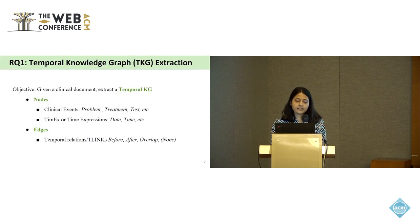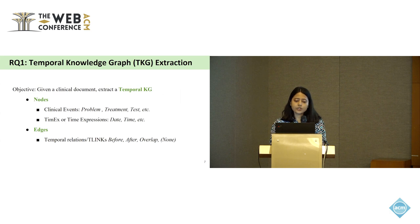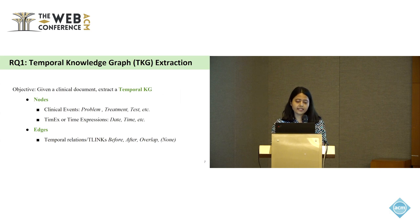The first question is: given a clinical document, we want to extract a temporal knowledge graph where nodes are clinical events — such as problem, treatment, test — and time expressions such as date, time, duration, or frequency. The edges represent temporal relations or T-links, such as before, after, or overlap.